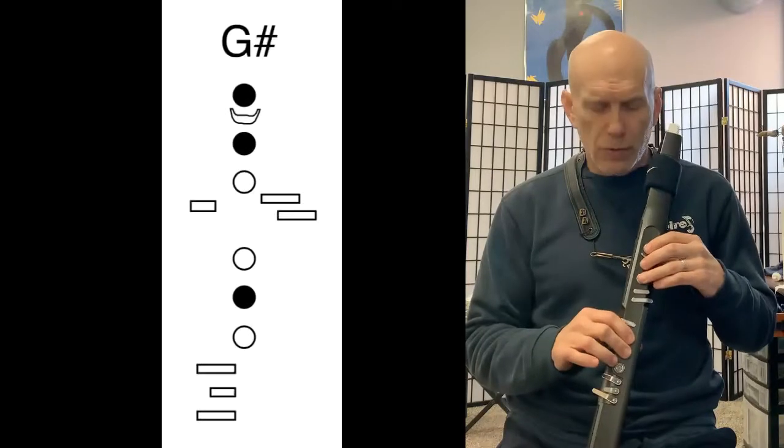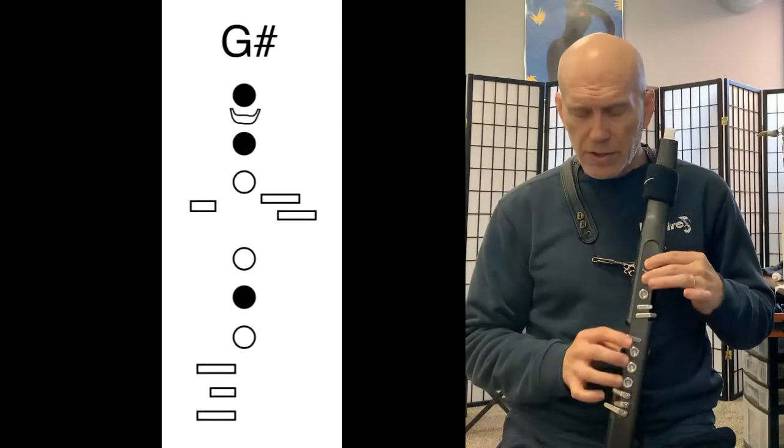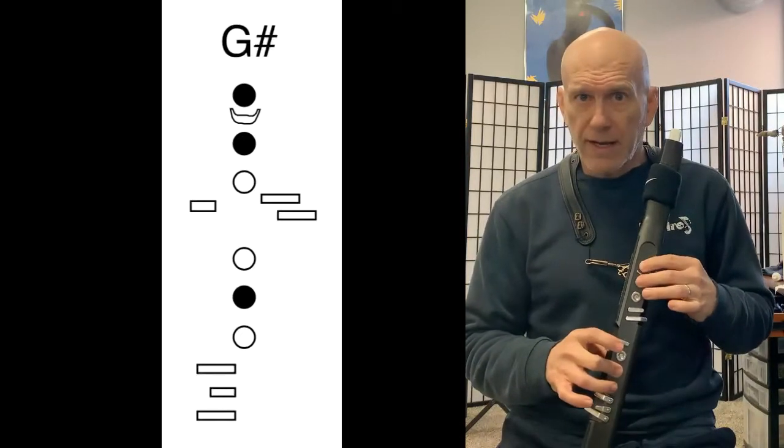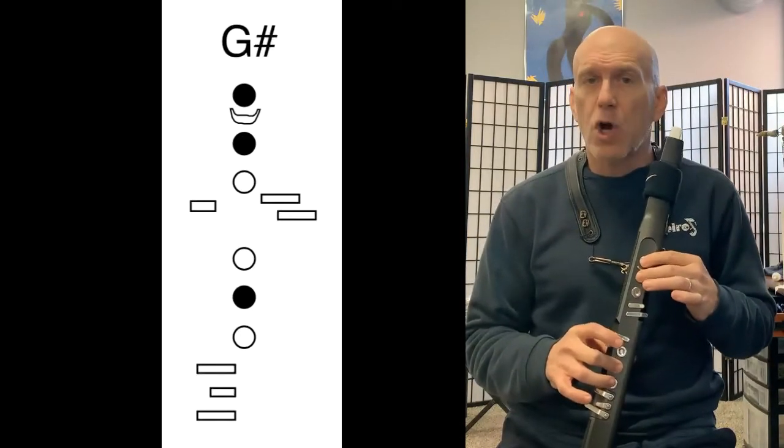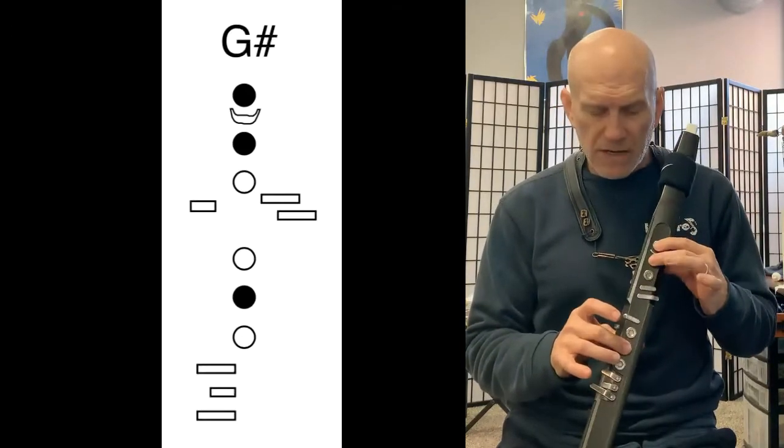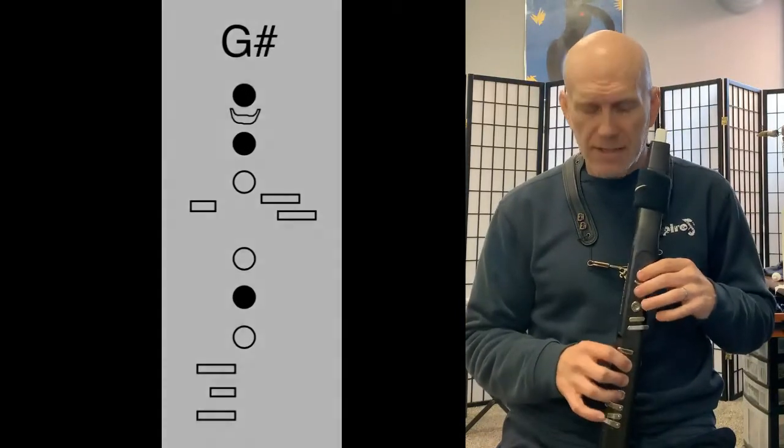So what we're going to use is on our left hand, the first two circles, one and two, and the second circle on our right hand. And that's going to be our G sharp. And we'll be coming there from an F sharp. So that is a very comfortable fingering.